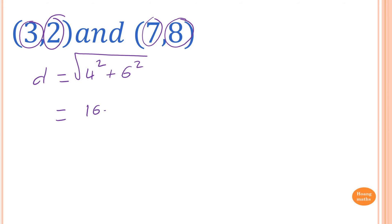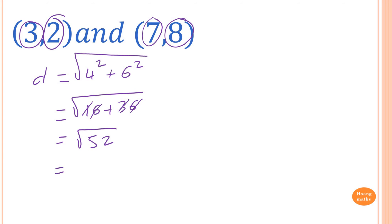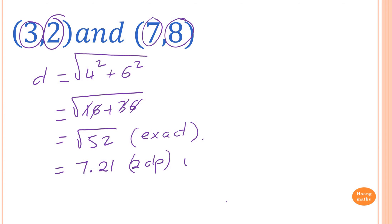4² = 16 and 6² = 36, so 16 + 36 = 52, giving d = √52. If the question asks for exact form, leave it as √52. For two decimal places, √52 ≈ 7.21 units.